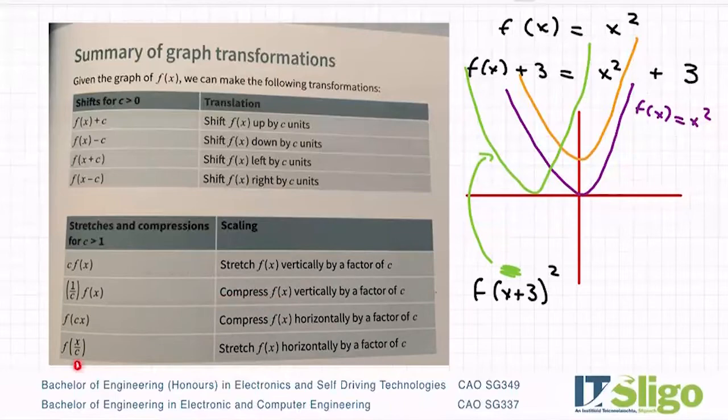Now again, if it's inside the brackets, then it's horizontally that it gets affected. And again, it's the opposite to what you would expect. So when it's a cx, it's a compression. When it's over c, it's a stretching or it gets bigger. So I like that table because it's a summary of all of the graph transformations that you could get asked. These ones up here get asked much, much more than these ever do.